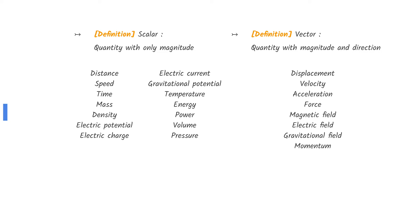Below are examples of scalars and vectors. Mass, potential difference, intensity, and power are scalars. Velocity and momentum are vectors.